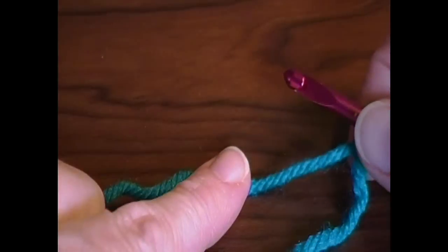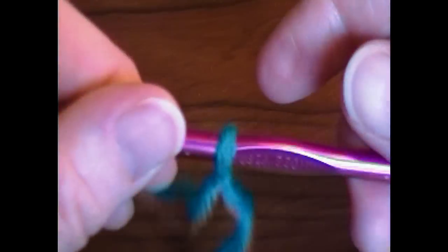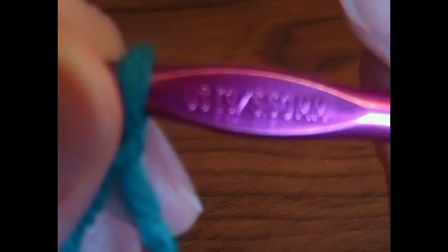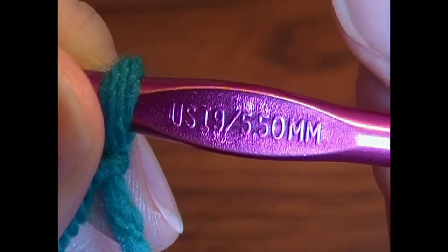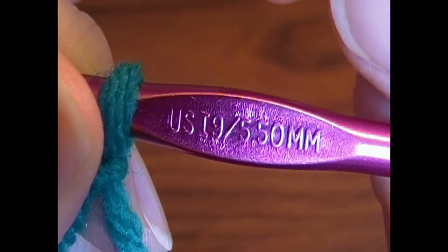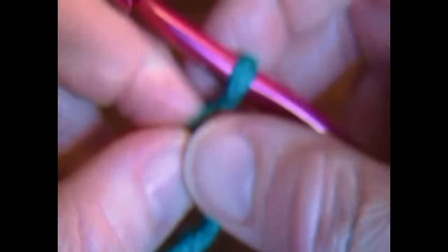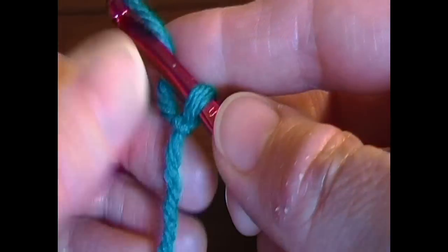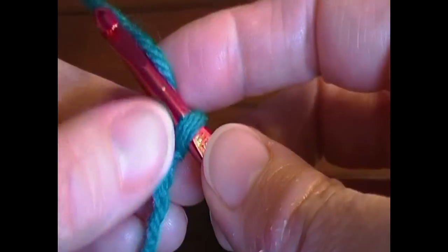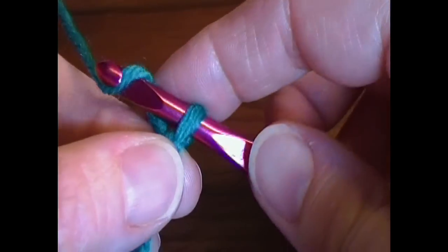I am using medium worsted weight yarn and an I-9 or 5.5mm crochet hook. I recommend you use the hook they recommend on the yarn label.